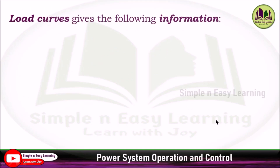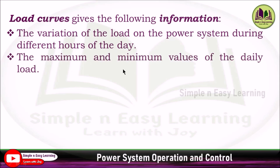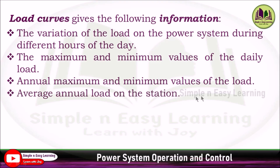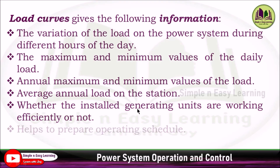The load curve gives the following information: the variation of load on the power system during different hours of a day; the maximum and minimum values of daily load and annual maximum and minimum values of the load; the average annual load on the station; and whether the installed generating units are working efficiently or not. This load curve also helps to prepare the operating schedule in an economic manner — based on the load demand, we can shut down some units and implement economic load scheduling.